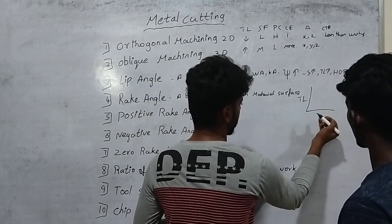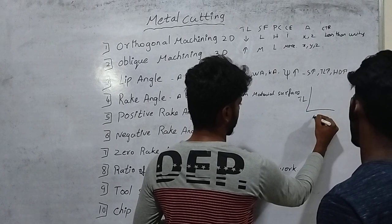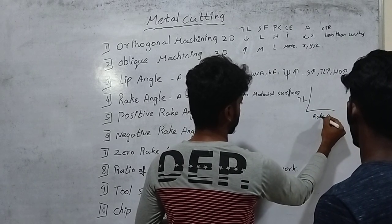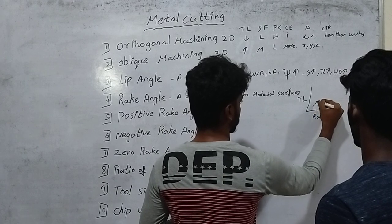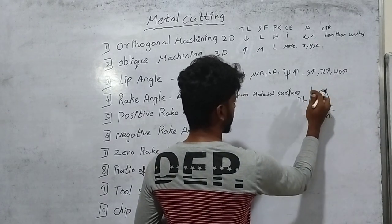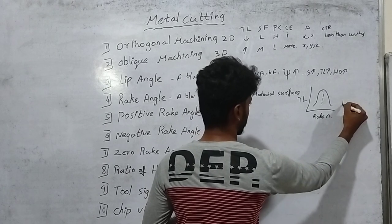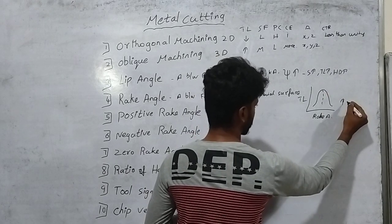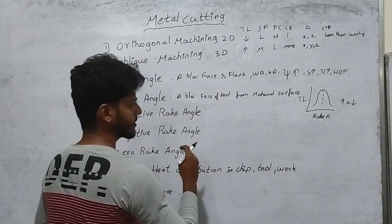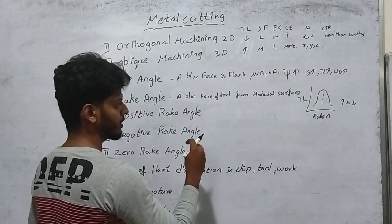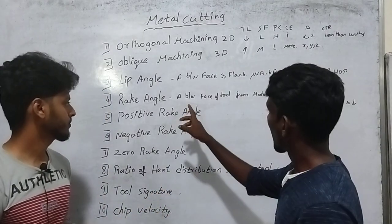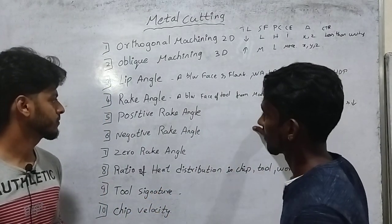This graph shows tool life on the y-axis and the rake angle on the x-axis. As the rack angle is increased, first the tool life increases and then the tool life decreases. So as we increase and then decrease the rake angle, the tool life first rises then falls.